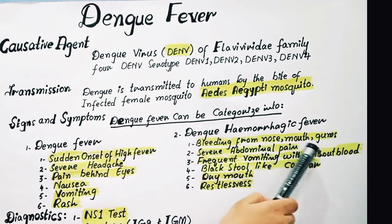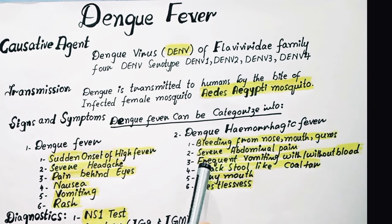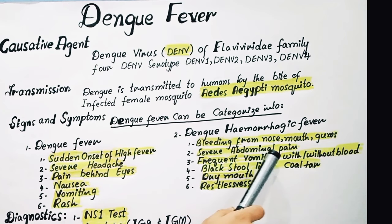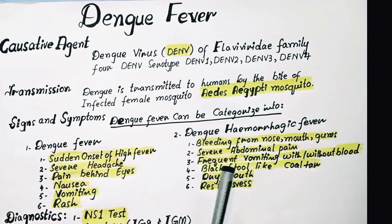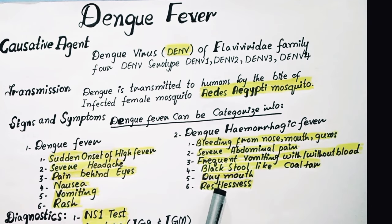Dengue hemorrhagic fever is a fatal condition characterized by bleeding from the nose, mouth, and gums, severe abdominal pain, frequent vomiting with stool like cold tar, dry mouth, and restlessness.